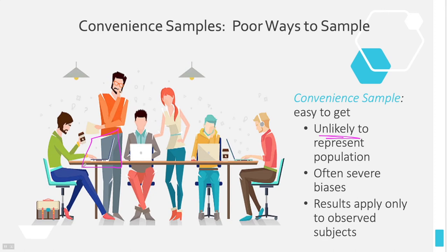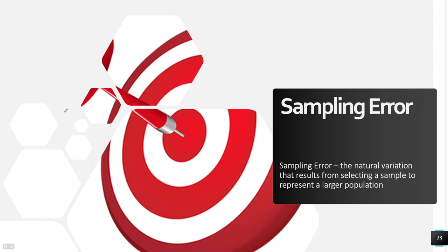If somebody comes up in person and asks you questions, you're much more likely to respond to in-person surveys — probably a hundred, maybe even a thousand times more likely to respond in person than online. Whether your sample is convenient or truly random, you're still going to have error. Your sample statistic — your sample mean or sample standard deviation — might not match exactly the population mean or the population standard deviation. That's okay, but we have to acknowledge that there is sampling error, and the natural variation in your data will mean you aren't going to be 100% accurate in using the sample to estimate the entire population.